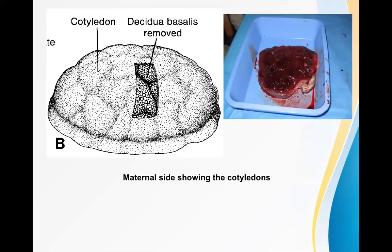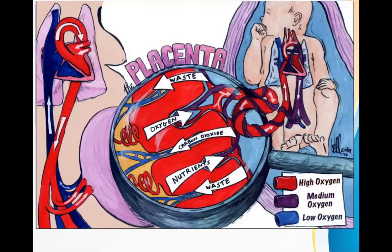When we examine the placenta from the maternal side, a small layer of decidua basalis is still present. When that decidua basalis is removed, the underlying cotyledons are visible — around 15 to 20 of them — they look like segments or ball-pieces.